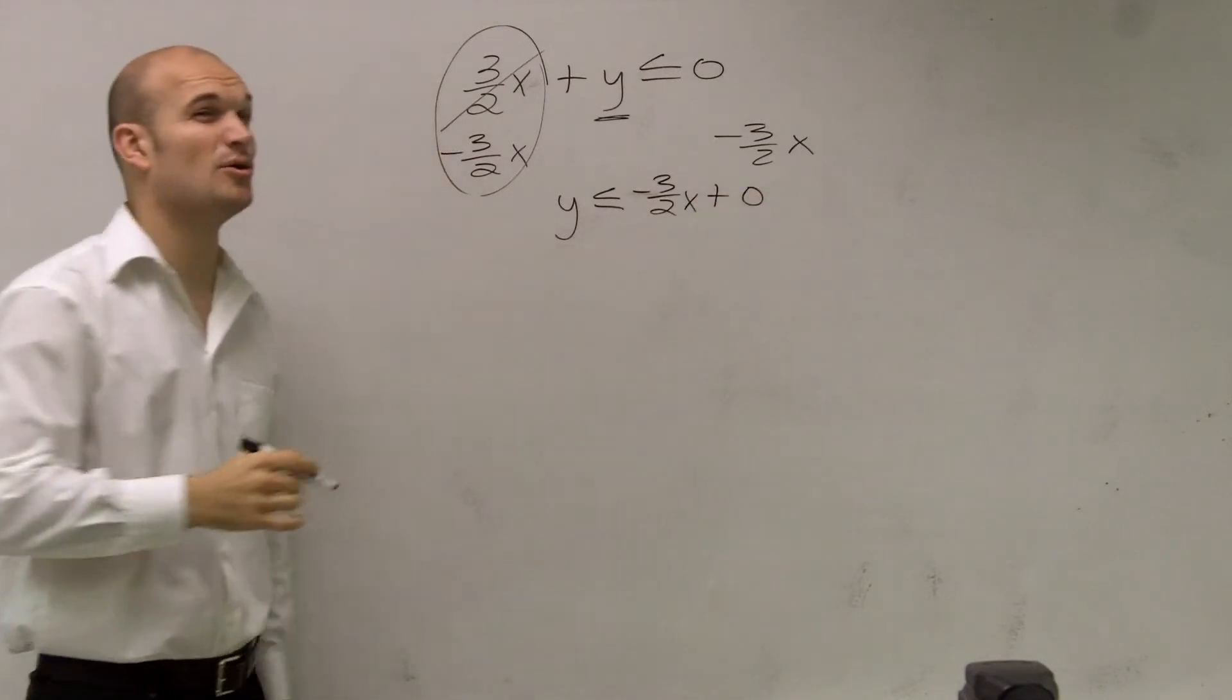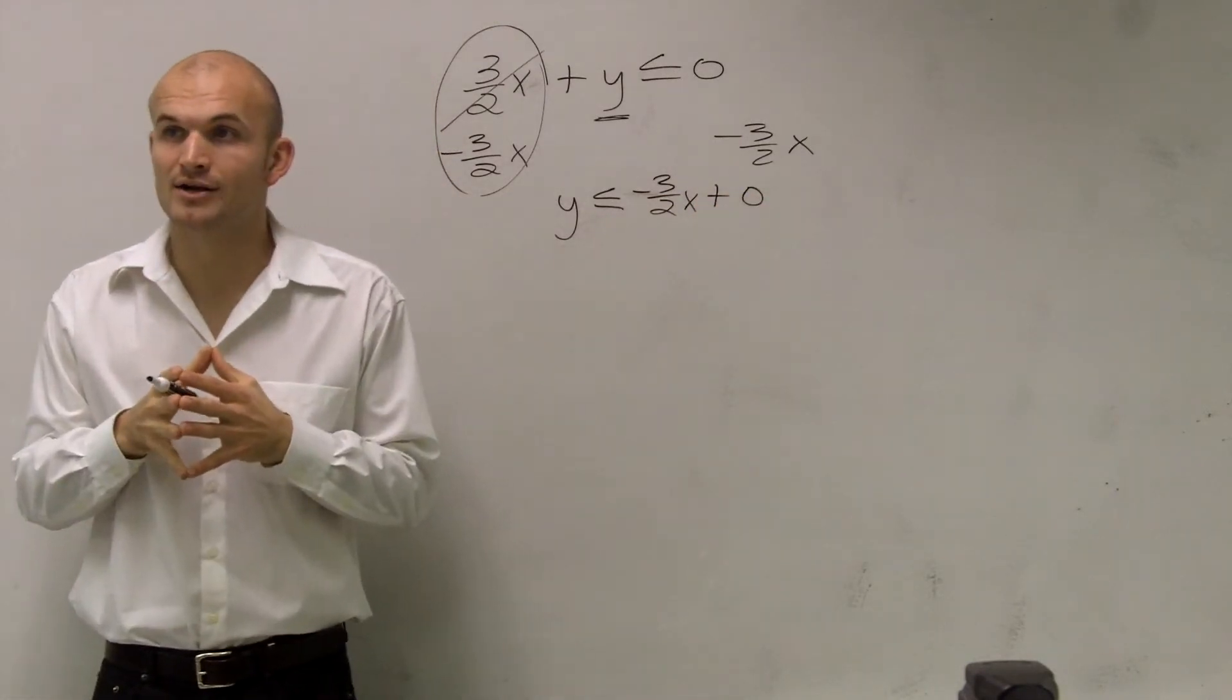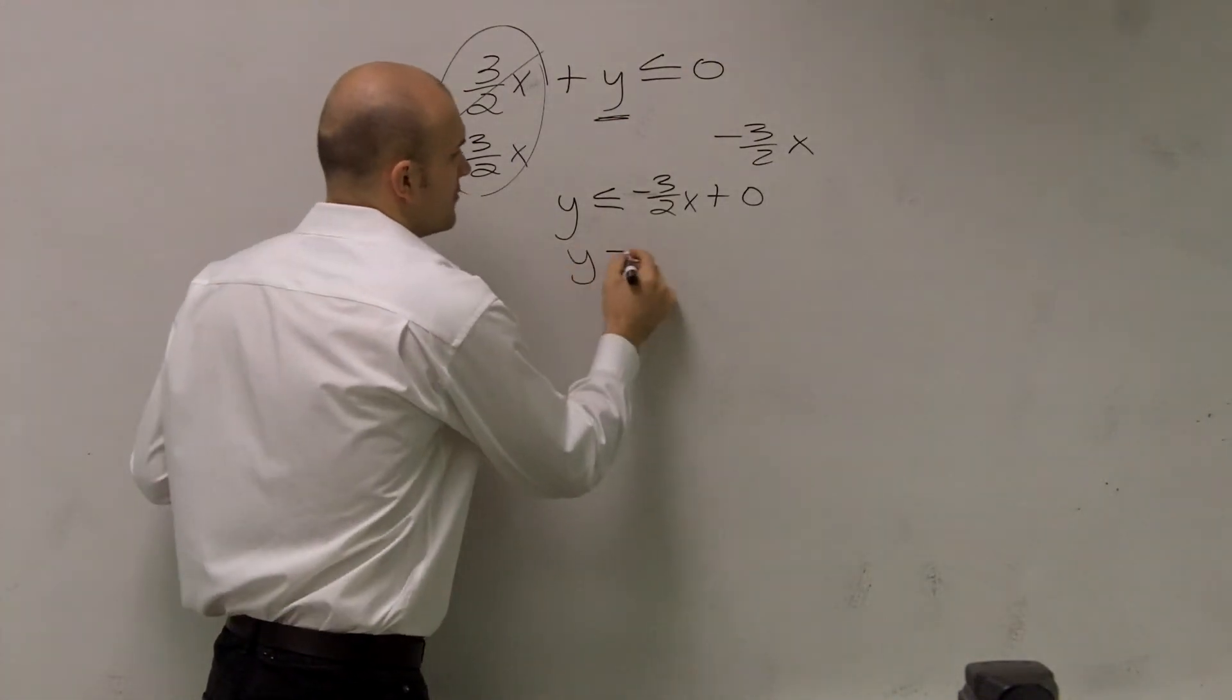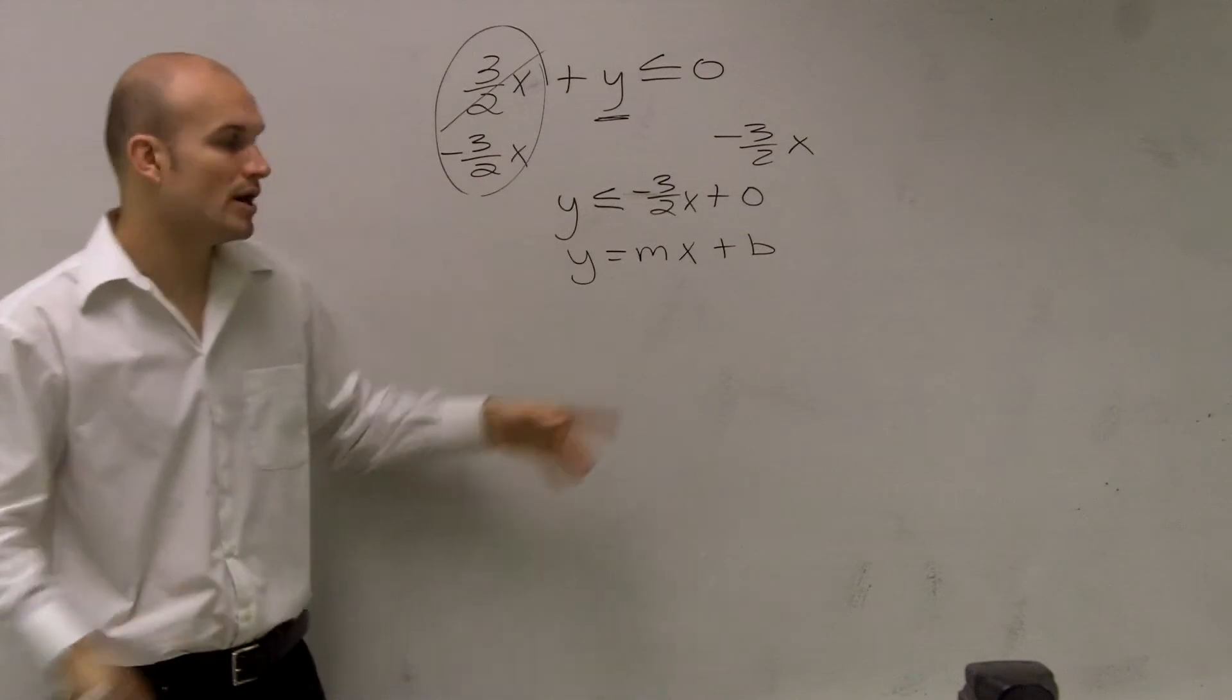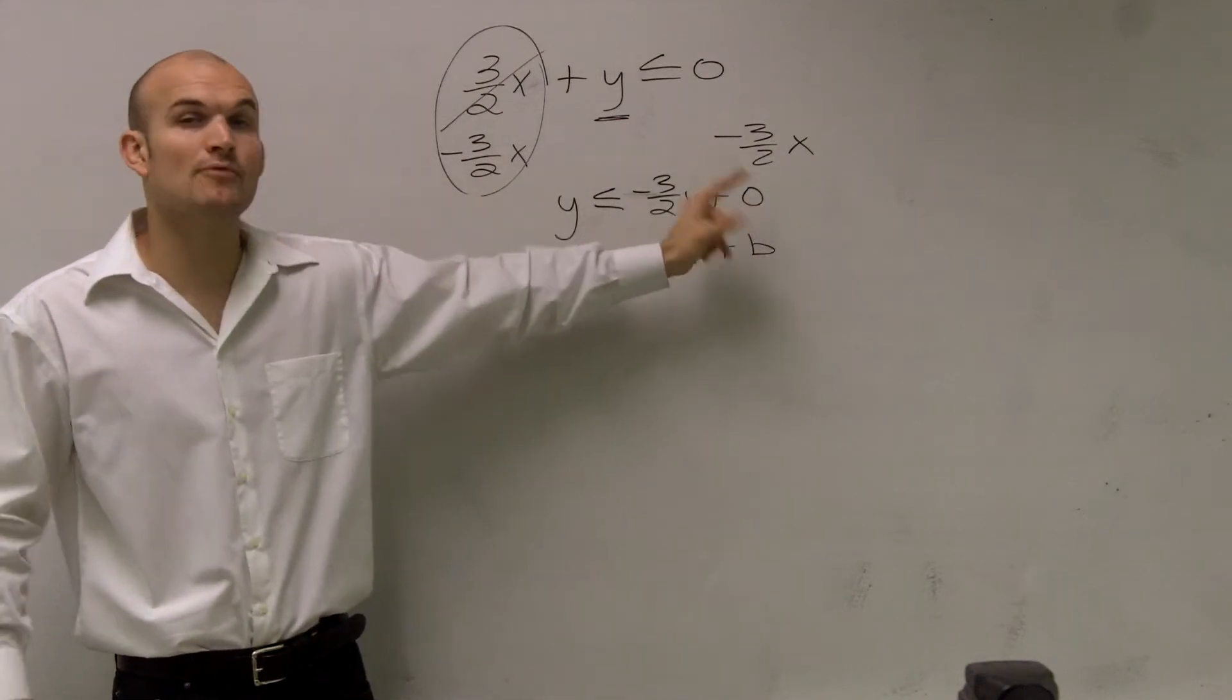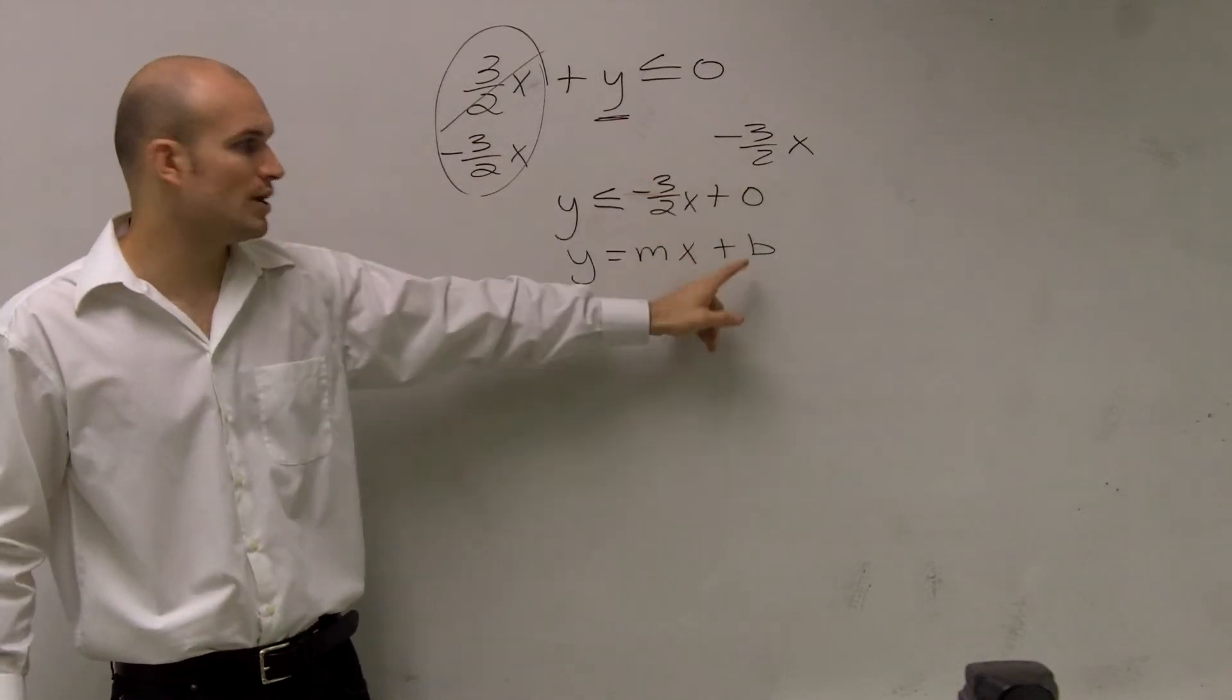Now, we usually don't write 0, but I'm going to write 0 in there so you guys can see what our y intercept is. Remember, we always want to write it as y equals mx plus b. Well, do we need to write 0? No. But I wrote it in there so you guys can see that. What is our y intercept?